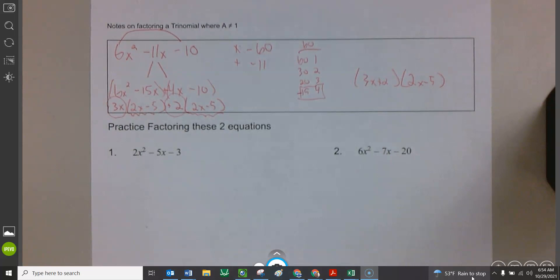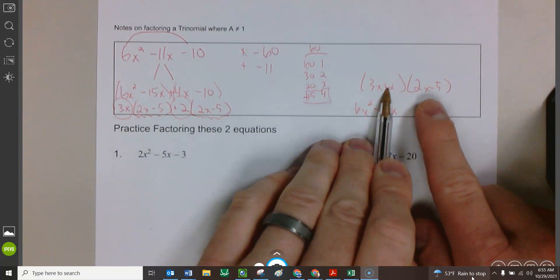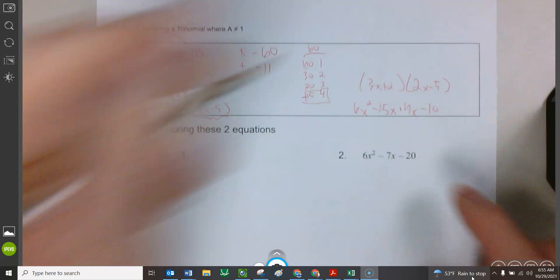If we ever wanted to check this, we would just have to do the distributive property twice. Three x times two x. Six x squared. Three x times negative five. Negative 15 x. Two times two x. Positive four x. Two times negative five. Negative ten. And it is. It's the exact same thing we got when we did our special little substitution. So we're good.